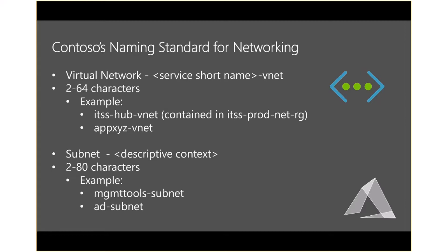For the networking naming standard, the format is service short name dash VNet. The ITSS-hub-VNet is contained in the shared services prod network resource group. Within that hub VNet, we'll have subnets such as the management tools subnet and the AD subnet, since those are shared services. Another example would be app XYZ-VNet, which is not in the prod net resource group but in its own — part of the lifecycle of that application within its own resource group.